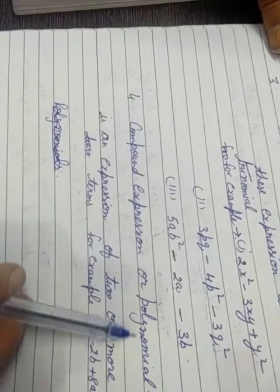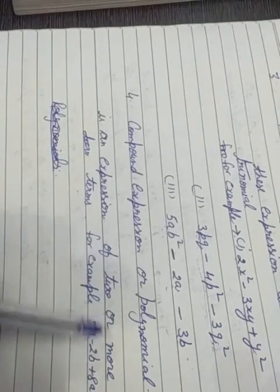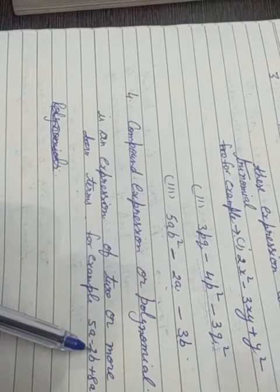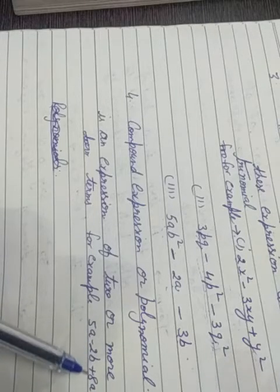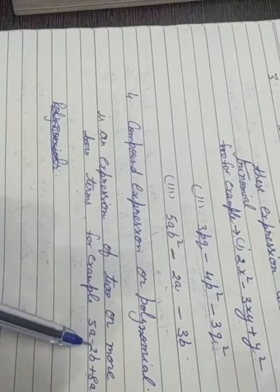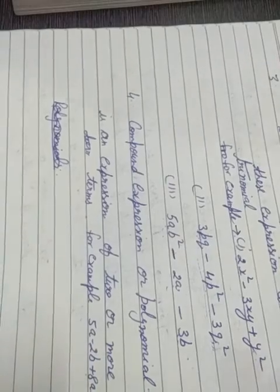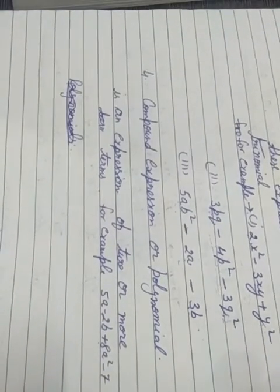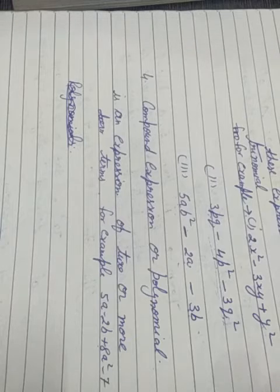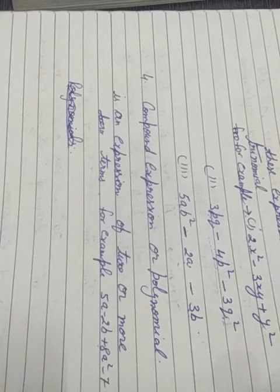Compound expression, or polynomial, is an expression of two or more terms. An expression which has more terms is called a polynomial or compound expression. For example: 5A - 2B + 8A² - 7. We will start Exercise 6 in the next video.